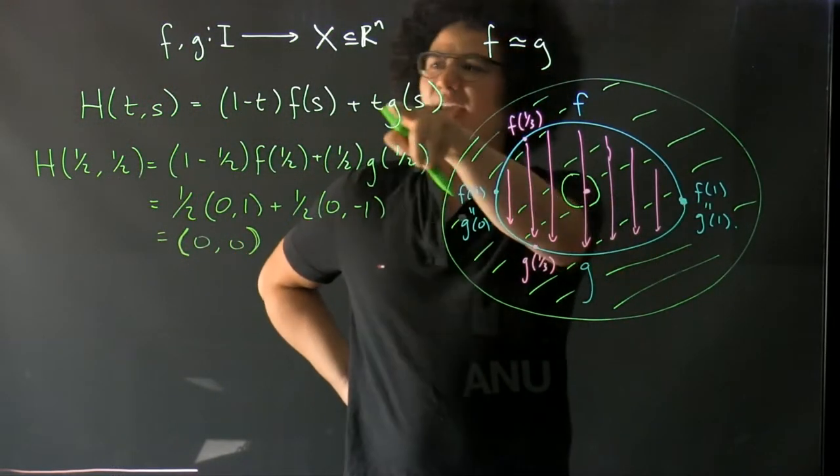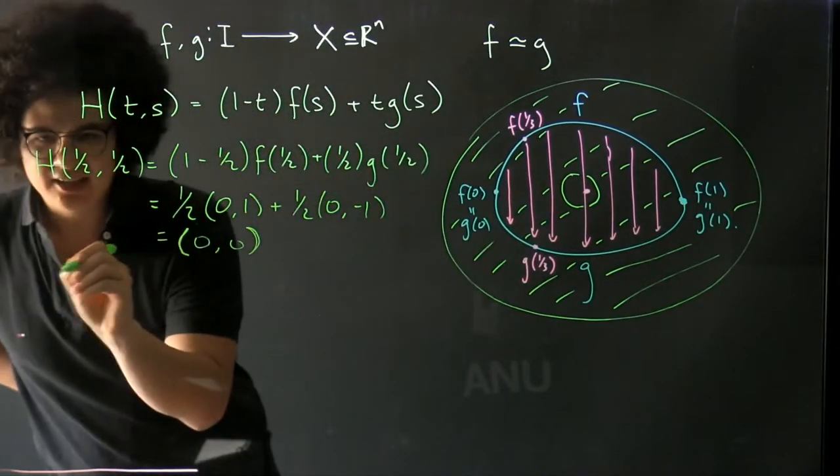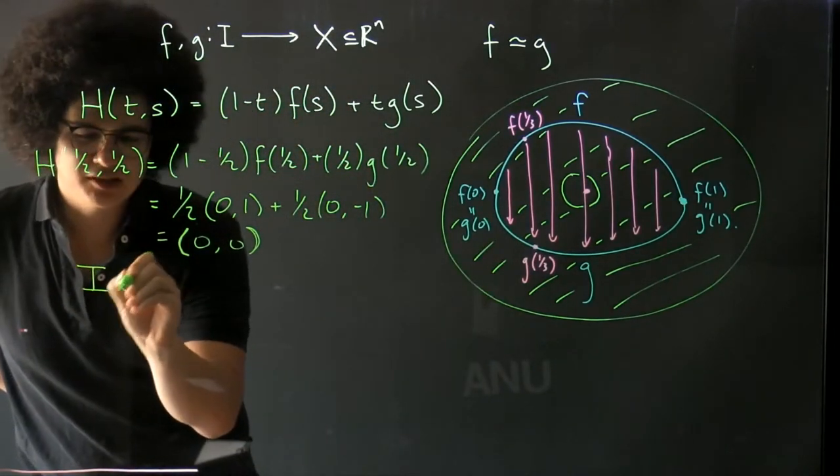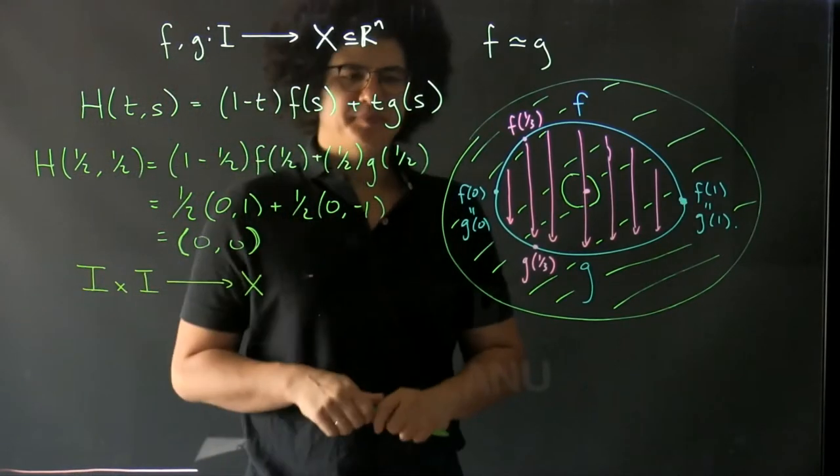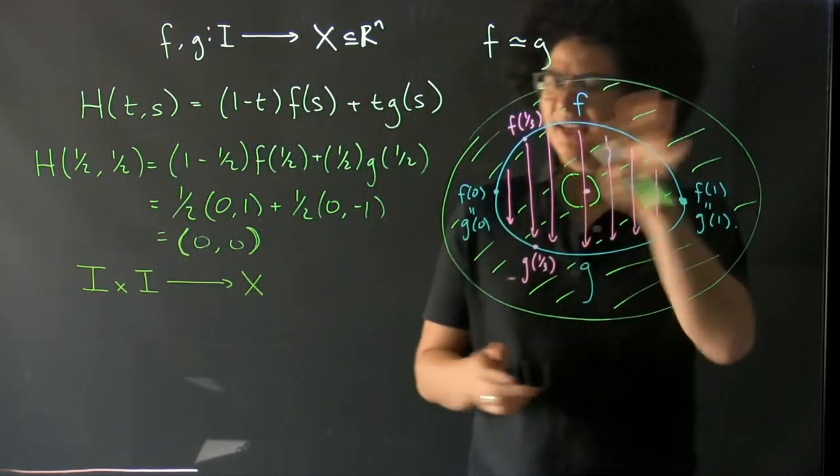However, that's not in our space X, and so H is not a map from the interval cross the interval into X where X is this annulus.